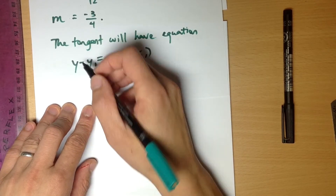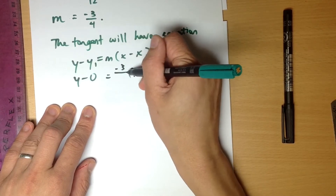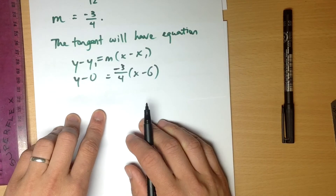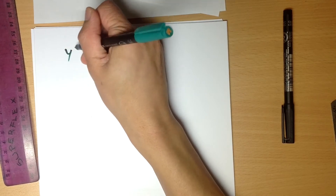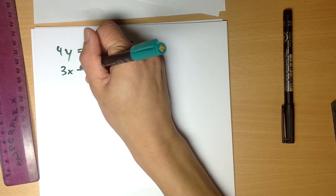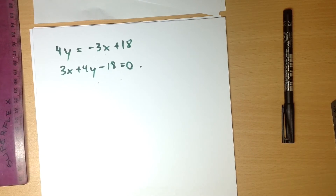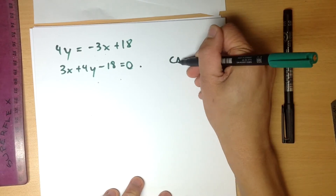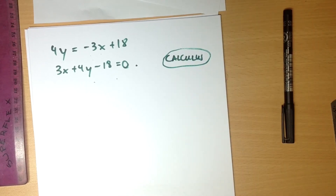Now I can write the equation of the tangent. Using point-gradient form with the point (6, 0) and gradient −3/4: y − 0 = −3/4 · (x − 6). Multiplying through by 4: 4y = −3x + 18, which rearranges to 3x + 4y − 18 = 0. So that was Method 1 using calculus — differentiating and substituting the x-value to find the specific gradient, which required working through those triangles.